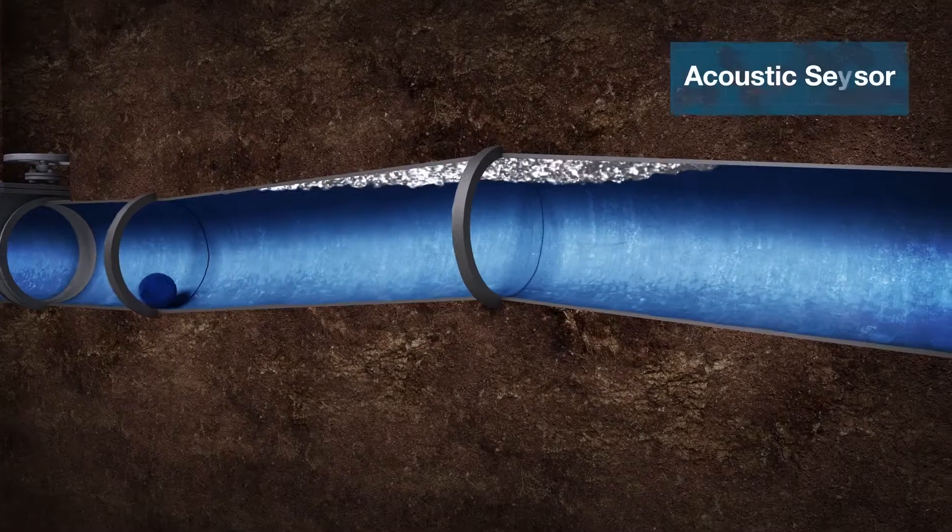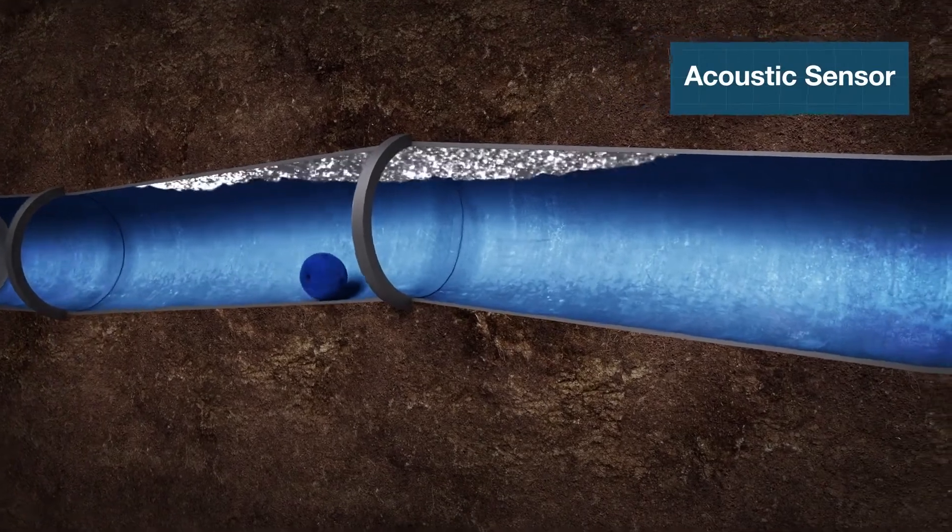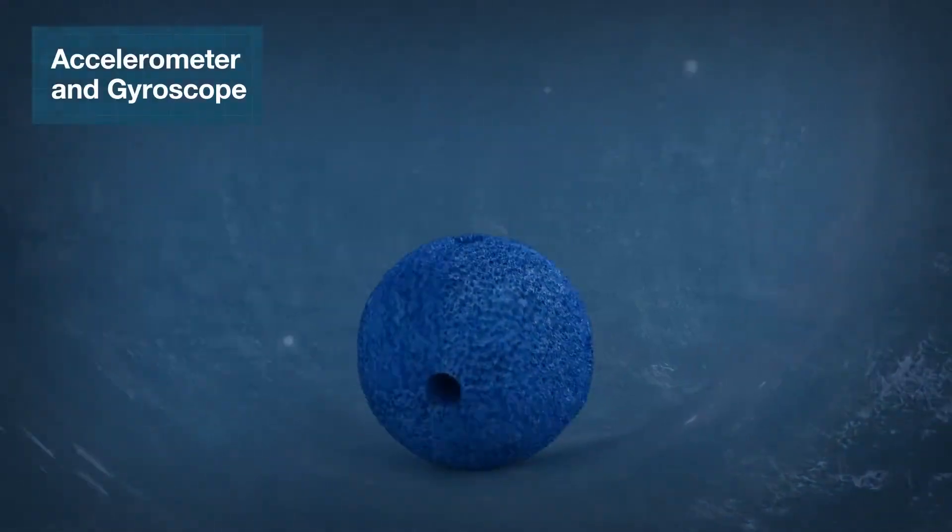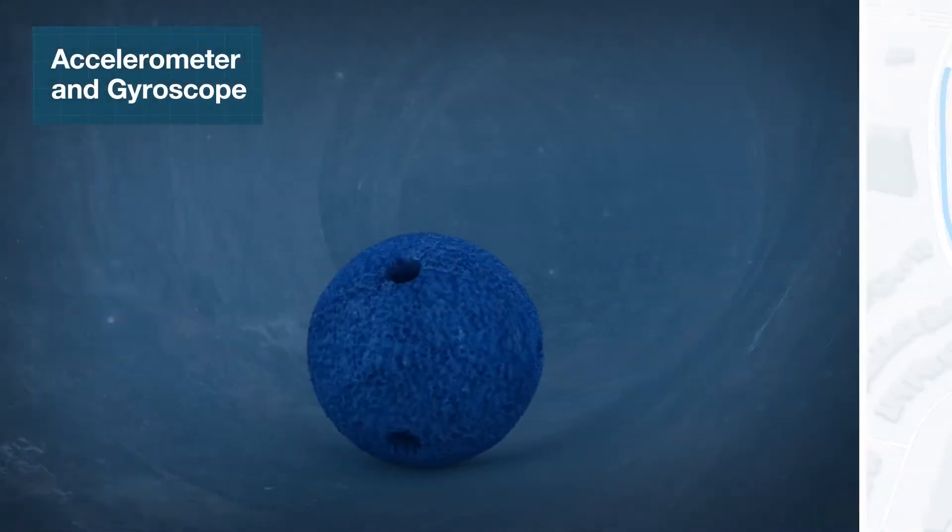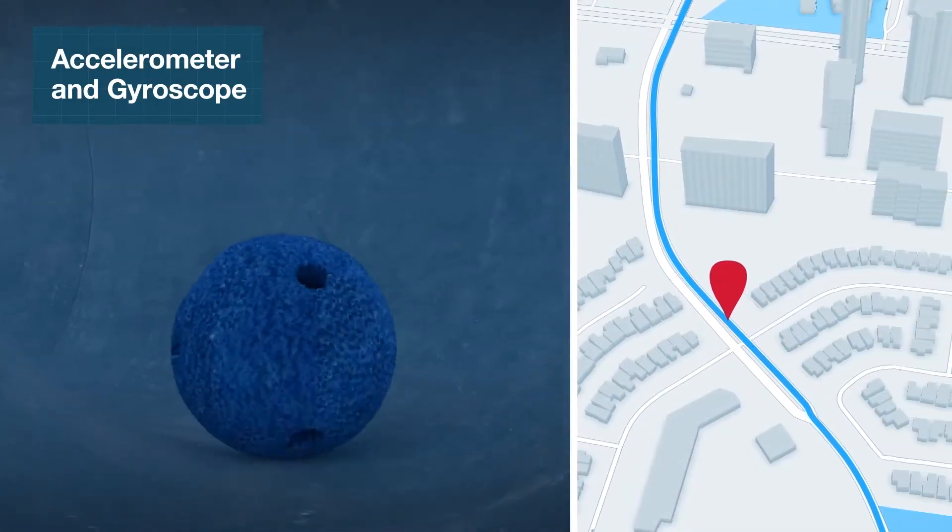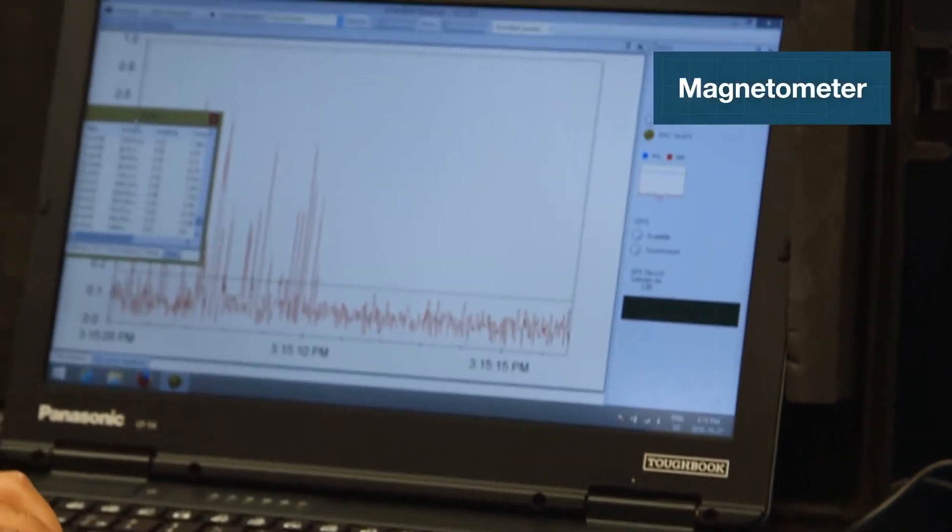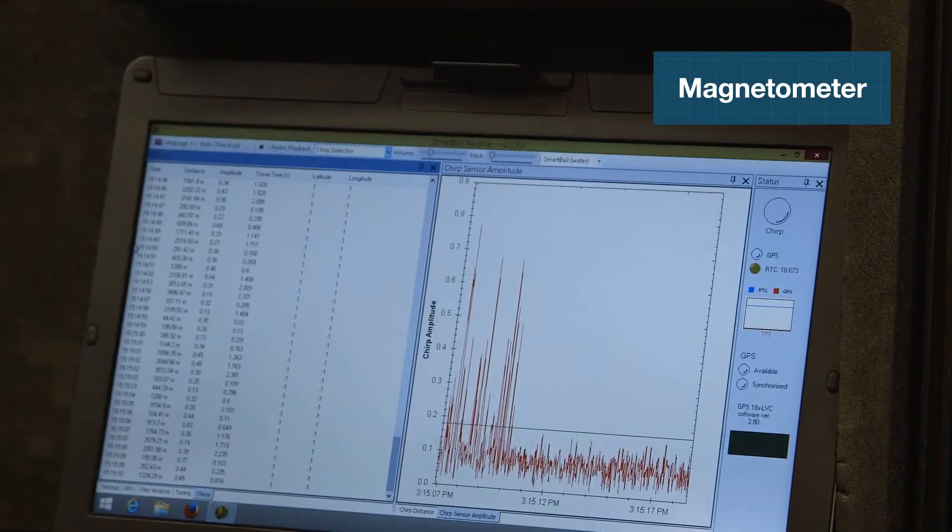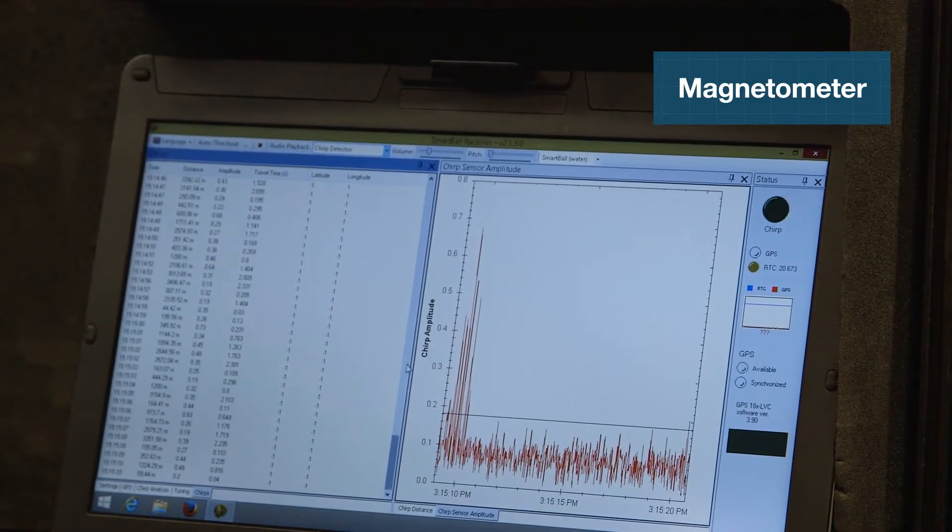The SmartBall is collecting data with an acoustic sensor that's listening for leaks and gas pockets. We've got an accelerometer and gyroscope measuring movement of the ball for pipeline mapping, and a magnetometer measuring the magnetic field coming off the pipe wall to find joints and other features.